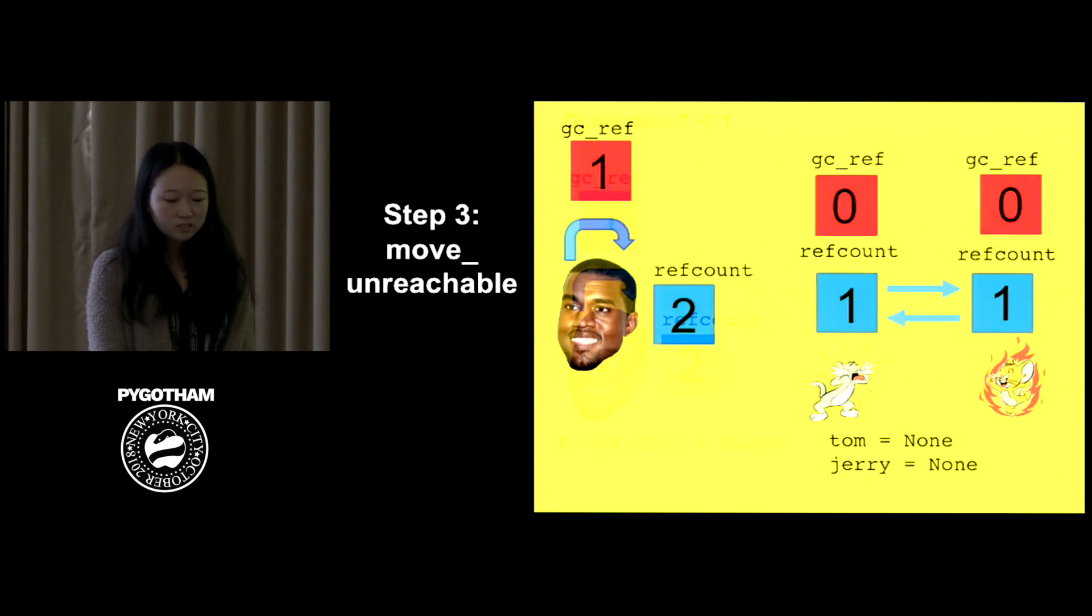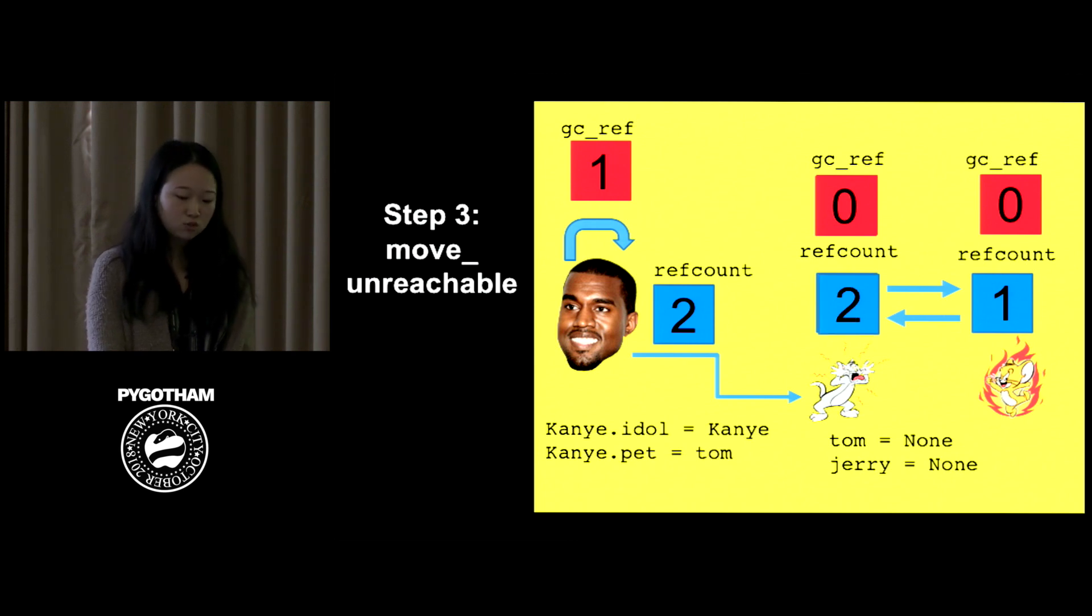Neither of these should be removed now because they are associated with a living object. So Python knows this. So before we remove tentatively unreachable objects, which are Tom and Jerry, it will traverse all living objects, so like Kanye, and see all the references they have. And at this point, it will be moved back to reachable and everything here will live in the program.